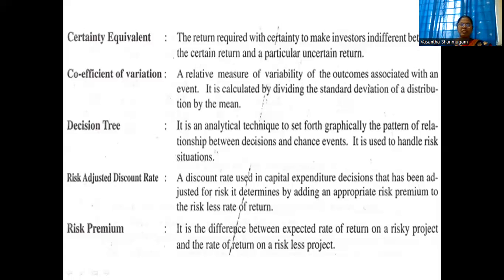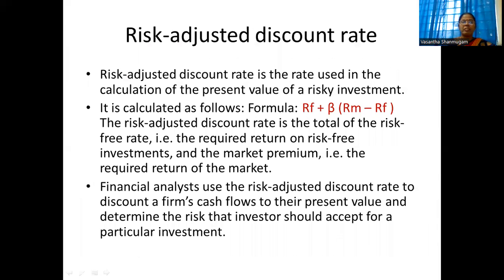The risk adjusted discount rate is determined by adding an appropriate risk premium to the risk-free rate of return. Risk-free return means the risk is zero. When the investor undertakes a high amount of risk, a premium is automatically incorporated — that is called the risk premium. Risk premium is the difference between the expected rate of return on a risky project and the rate of return on a risk-less project.